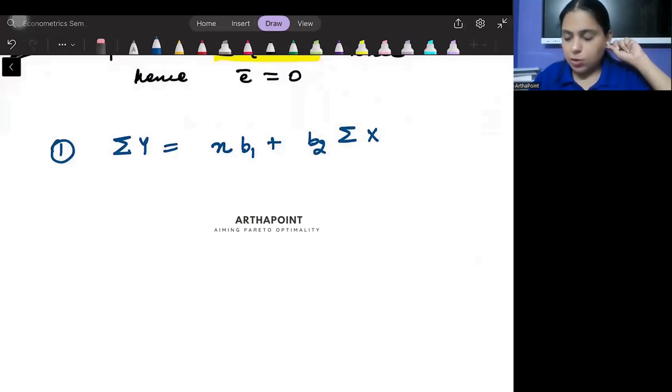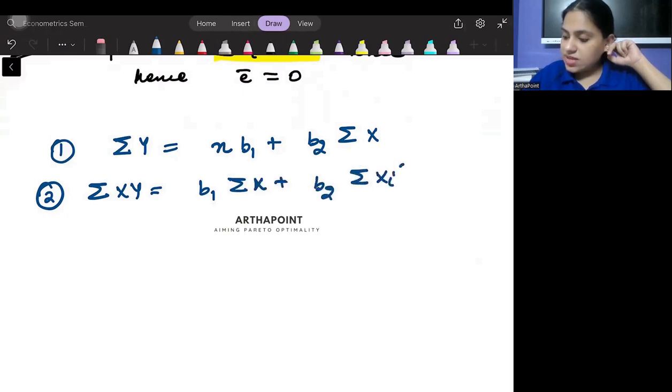And the second normal equation is summation xy is equal to b1 summation x plus b2 summation xi square. These two are the normal equations. Many times I will be using these two normal equations to prove anything.